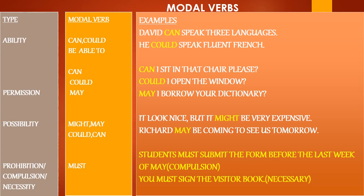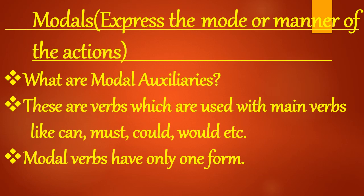In lecture one we covered: for ability — can, could, be able to; for permission — can, could, may; for possibility — might, may, could, can; and must expresses prohibition, compulsion, and necessity. What are modal auxiliaries? These are words used with main verbs like can, must, could, would, etc.